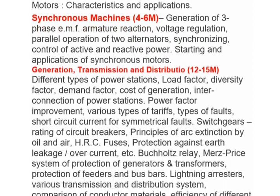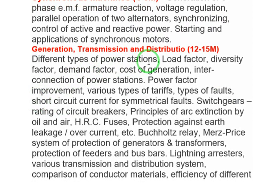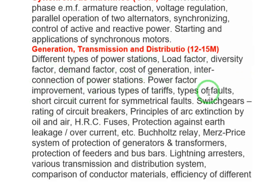Generation, Transmission, and Distribution carries a weight of 12 to 15 marks. Topics include different types of power stations — thermal, hydro, and nuclear — their efficiency and applications. Load factor, diversity factor, and demand factor will be tested. Power factor improvement questions will ask what capacitor value needs to be added.